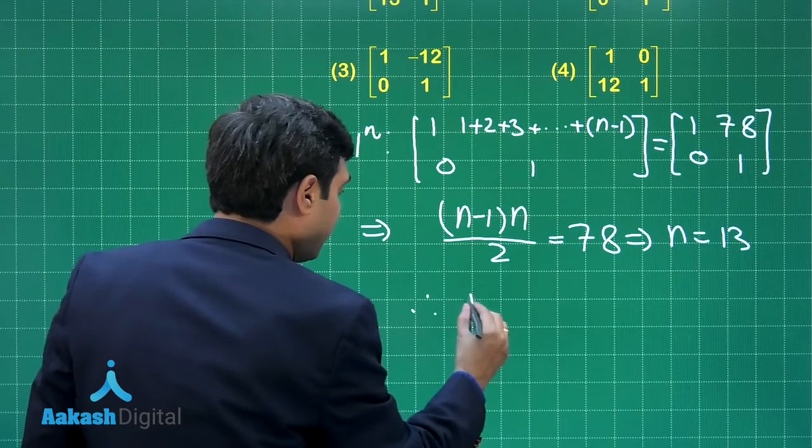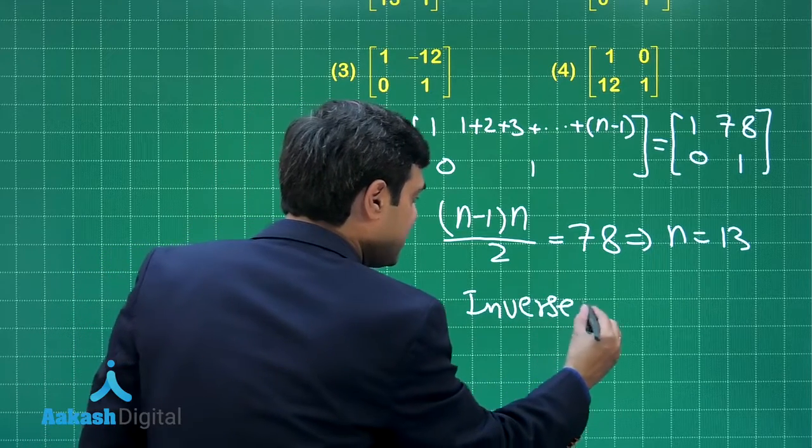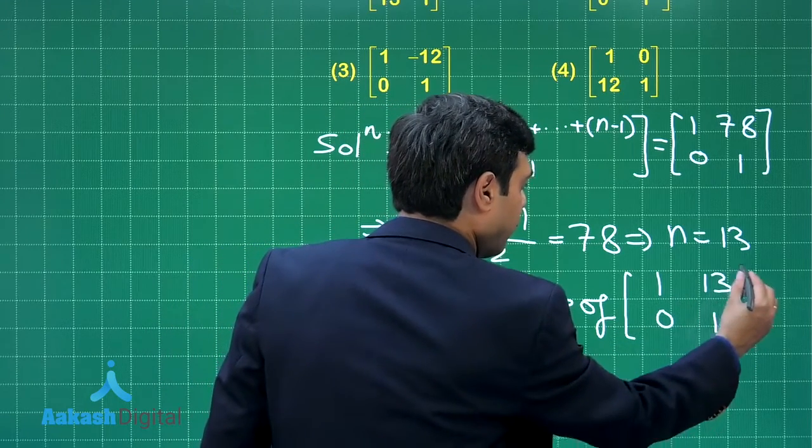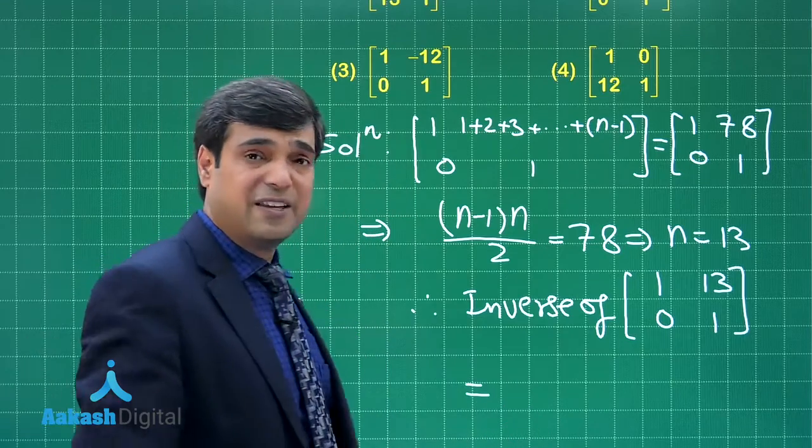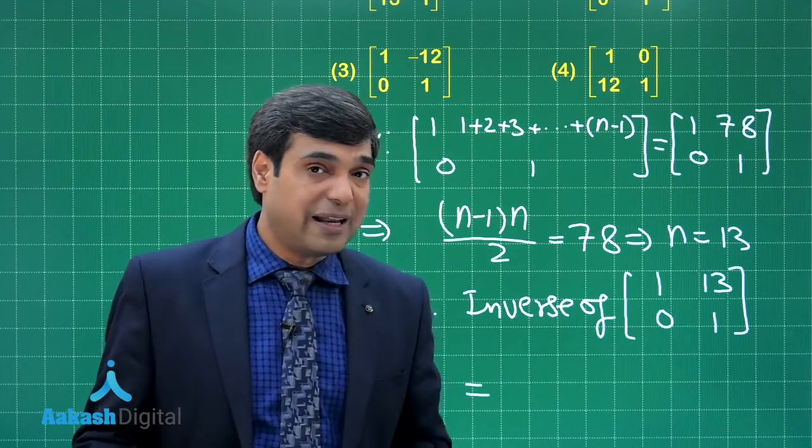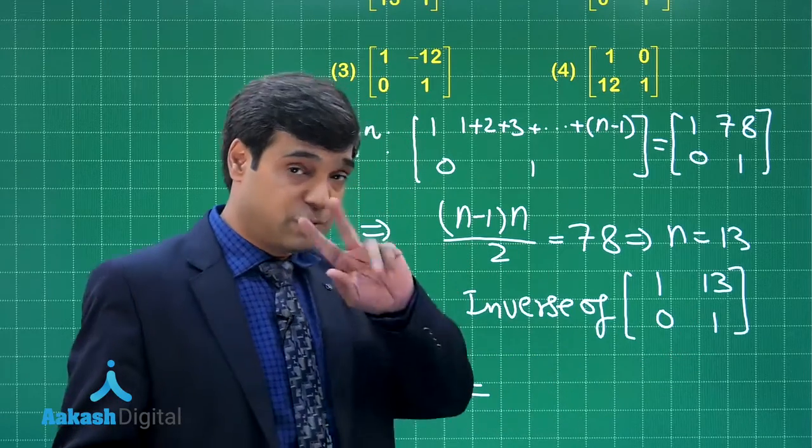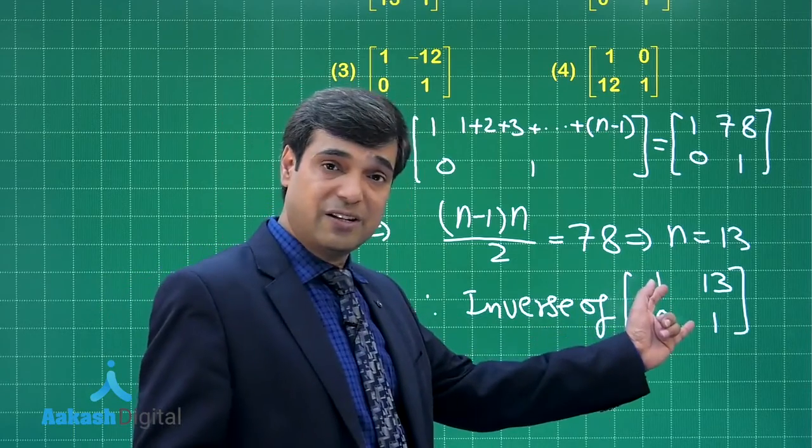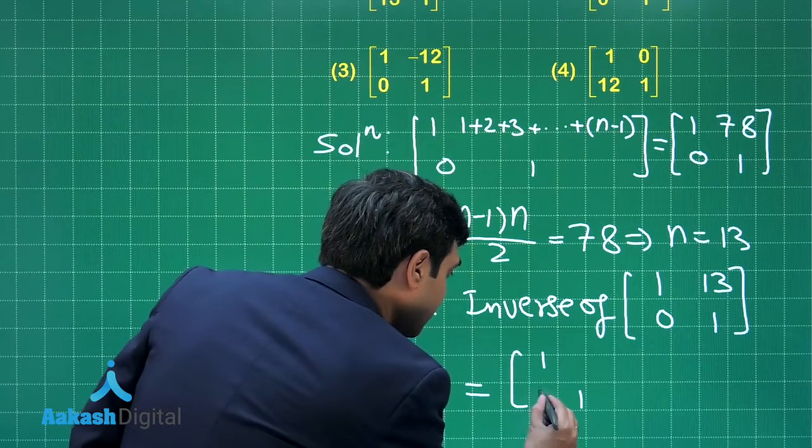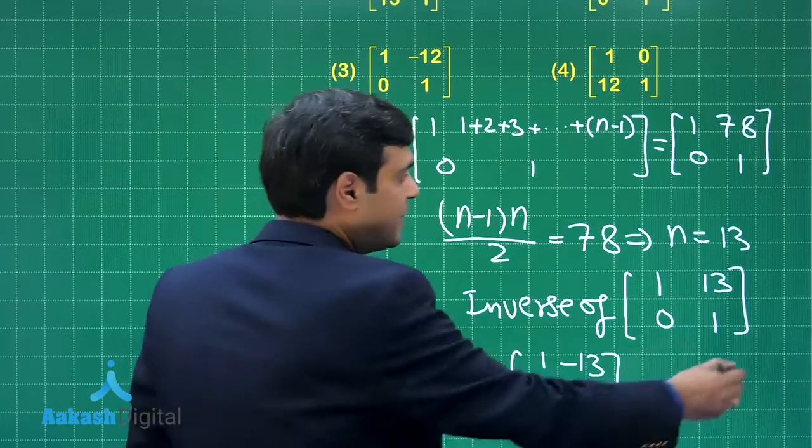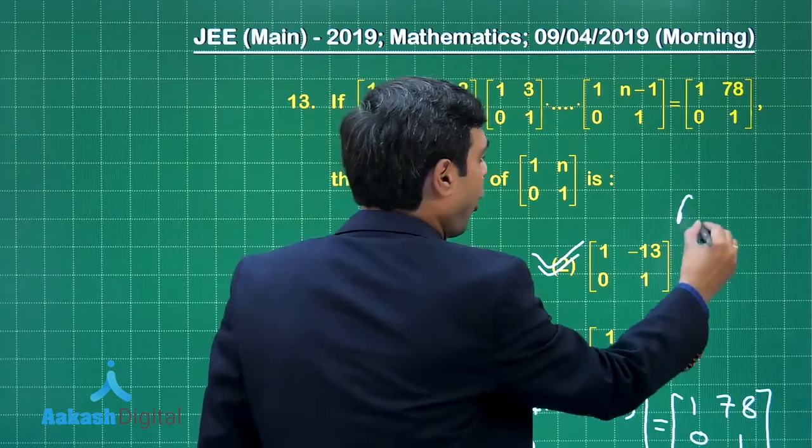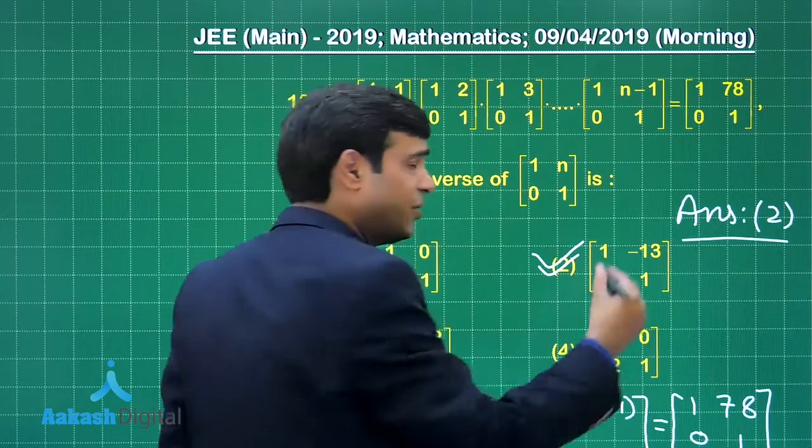Now we're looking for the inverse of [1 13; 0 1]. For 2×2 matrices it's easy: 1/determinant(A) multiplied by a matrix where diagonal elements interchange and off-diagonal signs change. So it's simply [1 -13; 0 1]. From the given options, that's option 2, the correct answer.